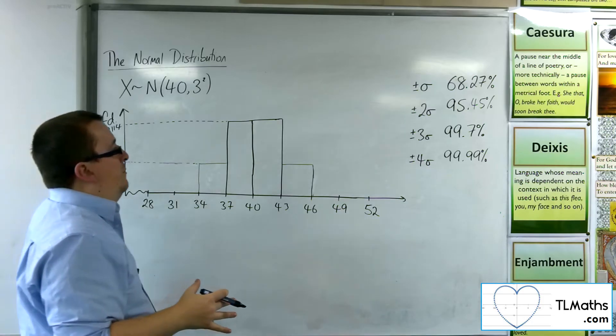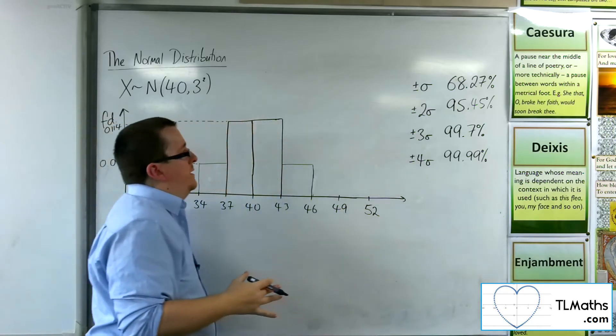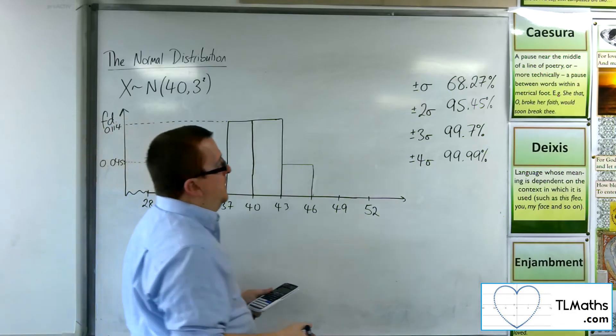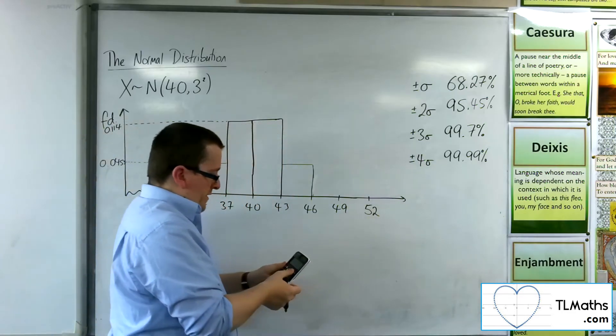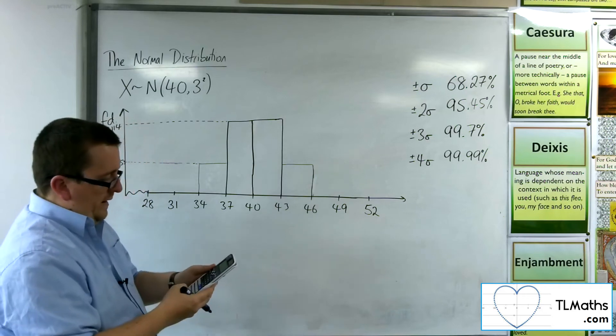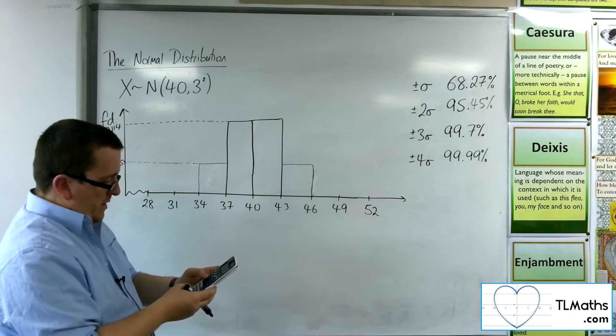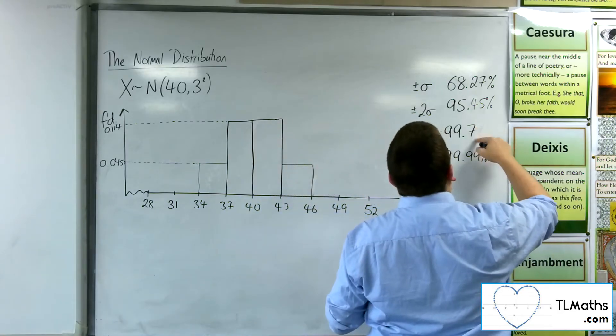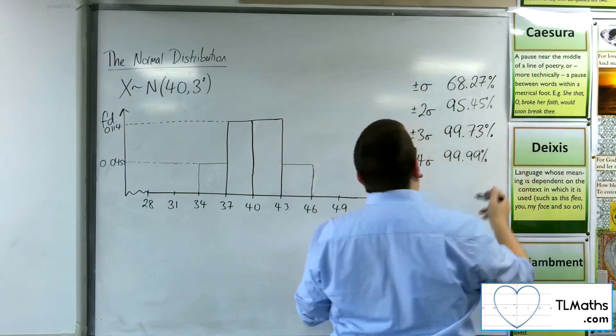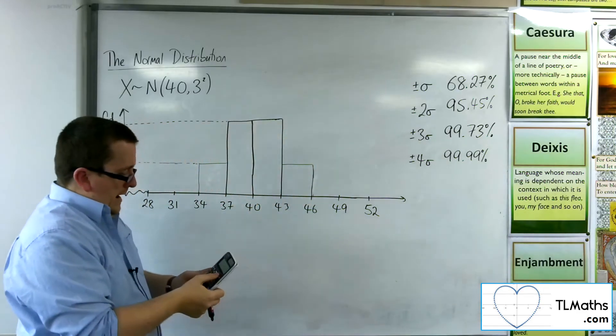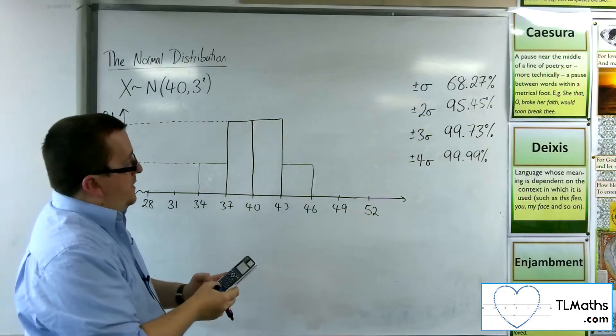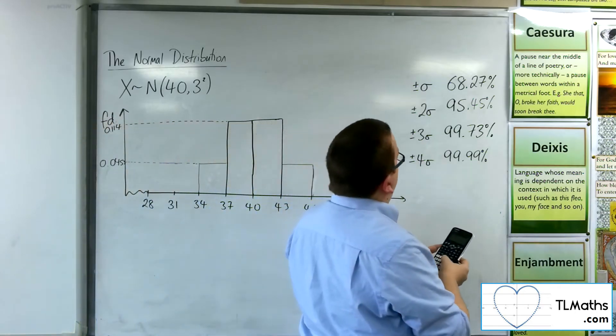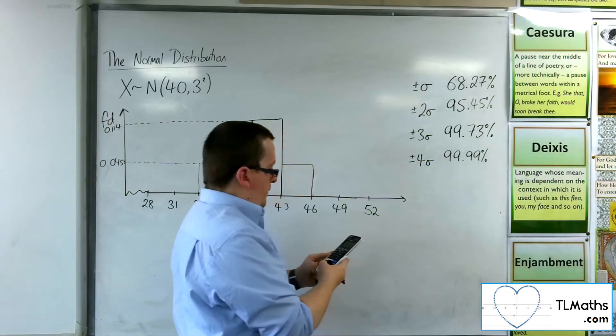So, we want to do a similar job for the next bit. So, for three standard deviations. We've got the 99.7. So, let's get one more decimal place on that. So, minus three to three is 99.73%. So, 0.9973, take away the 0.9545, leaves me with 4.28% for these two bars.